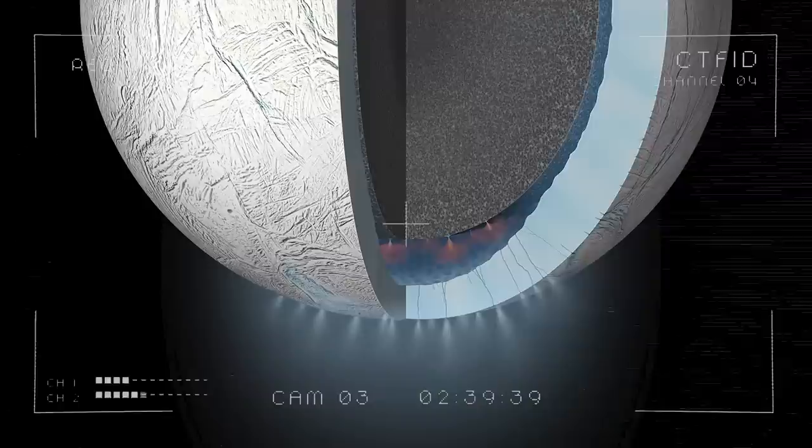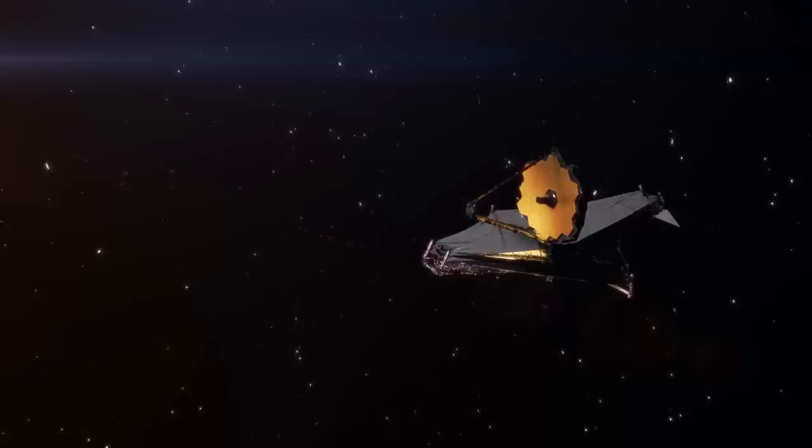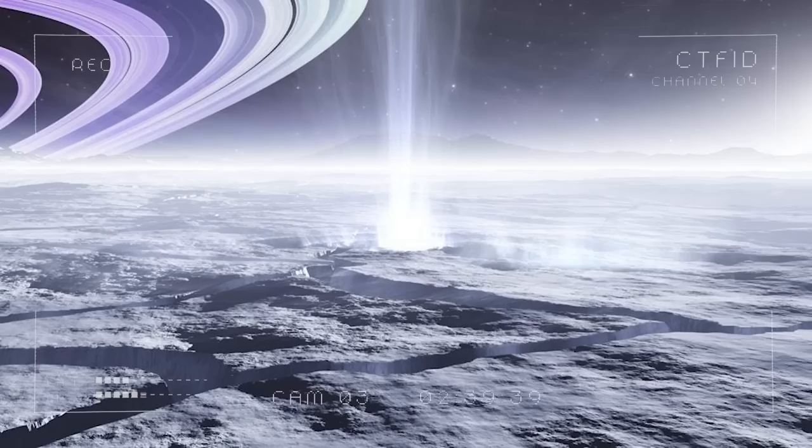In a recent important discovery, Webb spotted a giant plume of water vapor spewing 6,000 miles out from Enceladus' ocean and feeding Saturn's E ring.